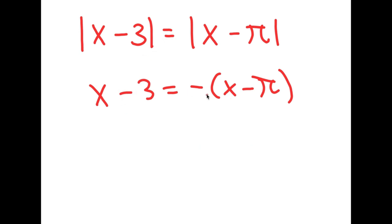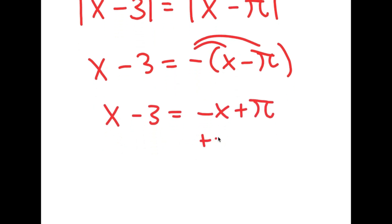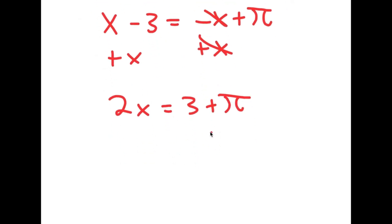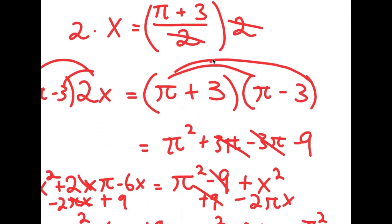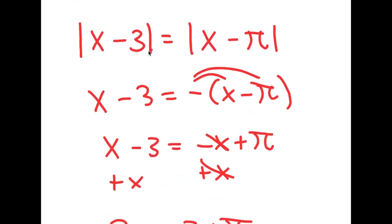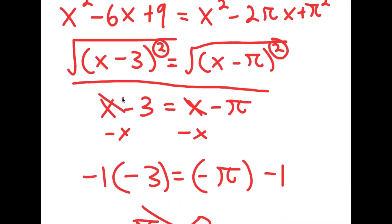If we solve x minus 3 equals negative(x minus pi), we distribute the negative sign to get x minus 3 equals negative x plus pi. Adding x on both sides gives 2x equals 3 plus pi, so x equals (3 plus pi) over 2, which is exactly what we started with. That is something really important to know: the square root of a square isn't just the normal version — it's the absolute value of that expression.